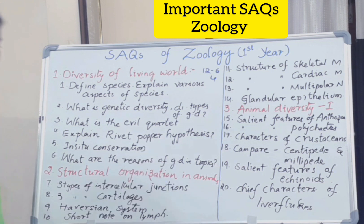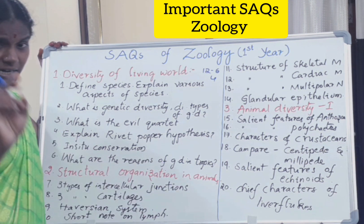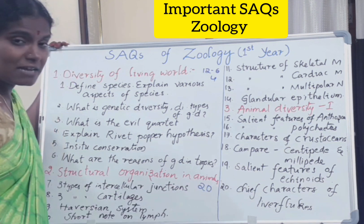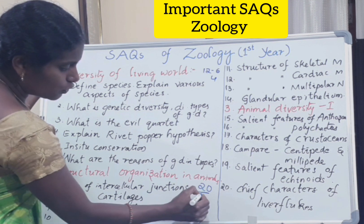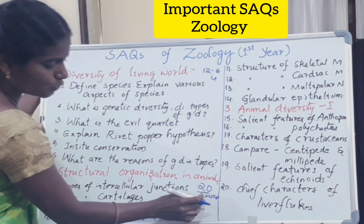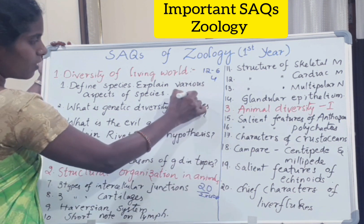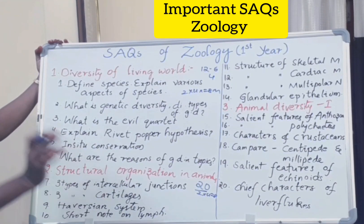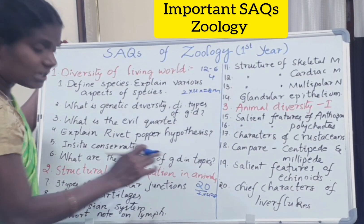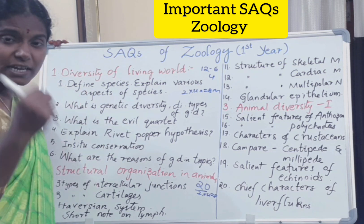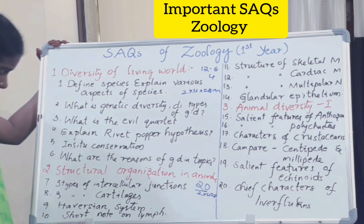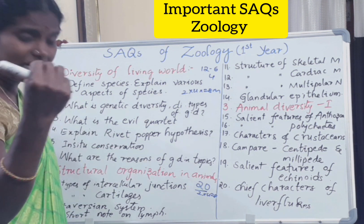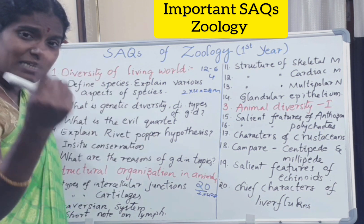Next is Structural Organization in Animals. From this chapter, 2 short answer questions will be coming — that is 8 marks. The important questions are: the 3 types of intercellular junctions — tight junctions, desmosomes, and gap junctions — and their diagrams. Types of cartilages — 3 types: hyaline cartilage, elastic cartilage, and fibrous cartilage — with their respective diagrams, examples, and locations.